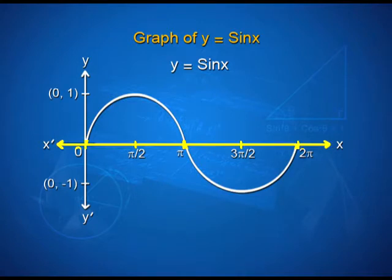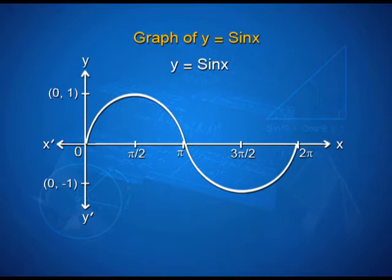This is the x-axis x'Ox and this is the y-axis yOy'. We begin with the origin and as it is an increasing function, we can see that the graph goes from 0 to 1 and then comes back to pi. In the same way we can plot the graph from pi to 2 pi. This is the graph of y = sine x.